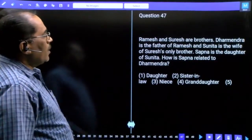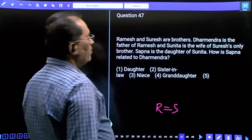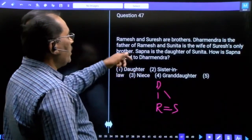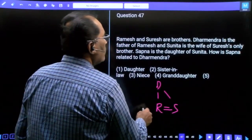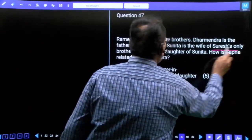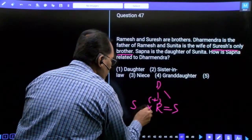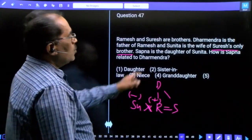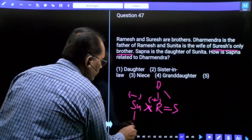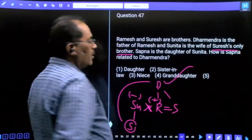Question 47, Ramesh and Suresh are brothers. Dharmendra is father of Ramesh. Sunita is the wife of Suresh, only brother. Dharmendra is the father of Ramesh, and Sunita is the wife of Suresh. So our answer is granddaughter.